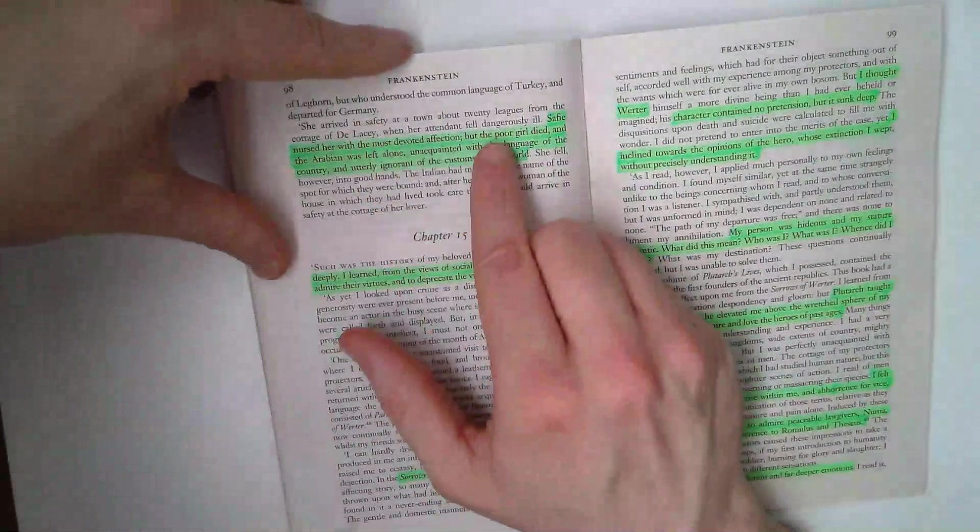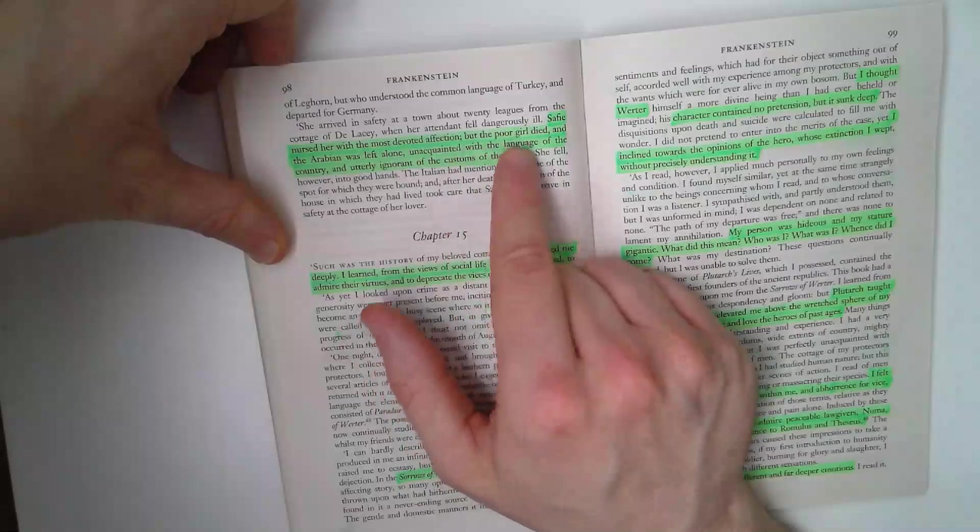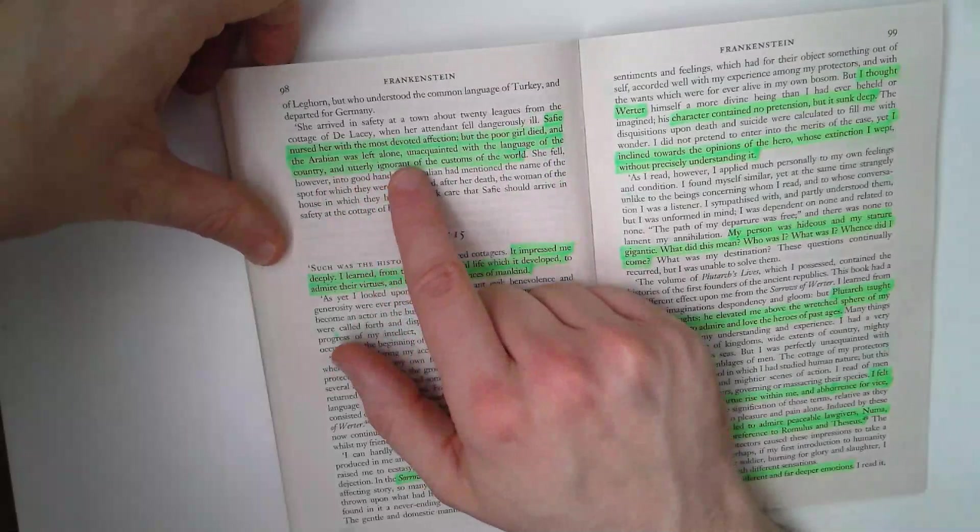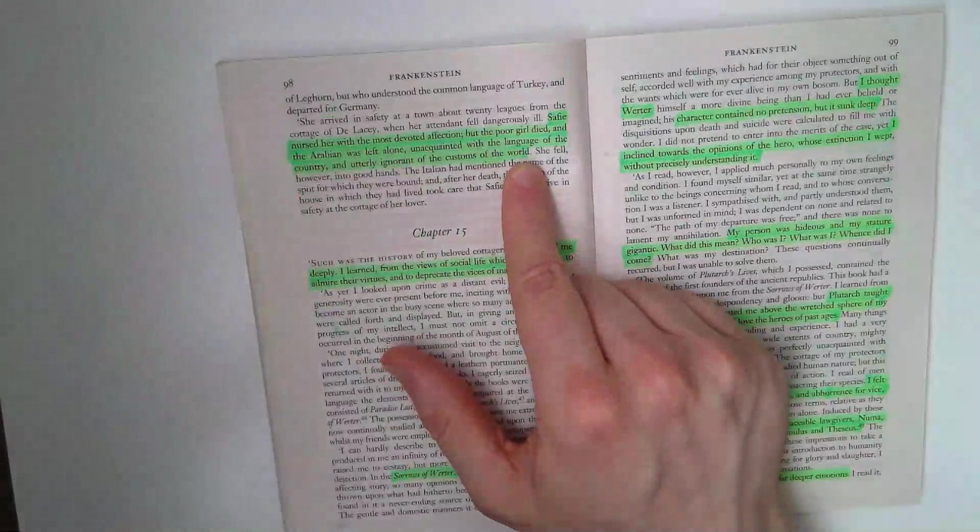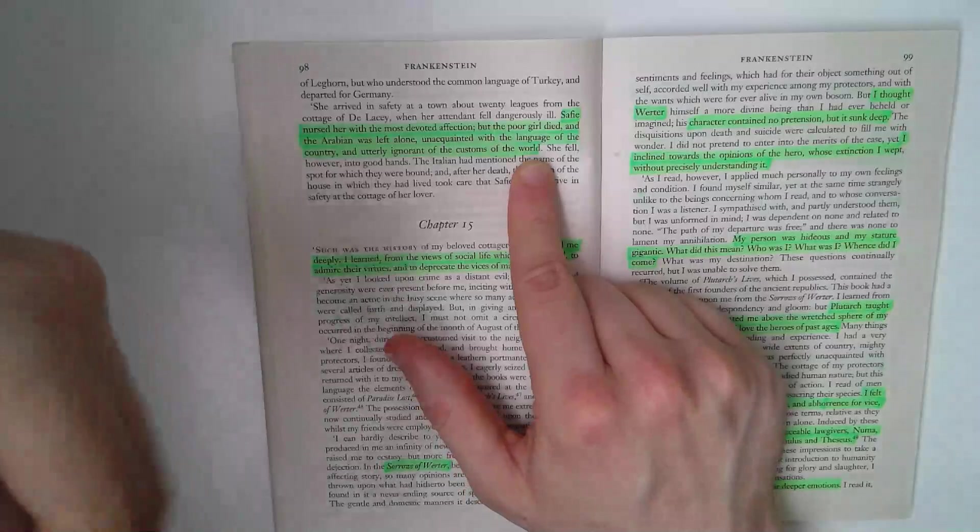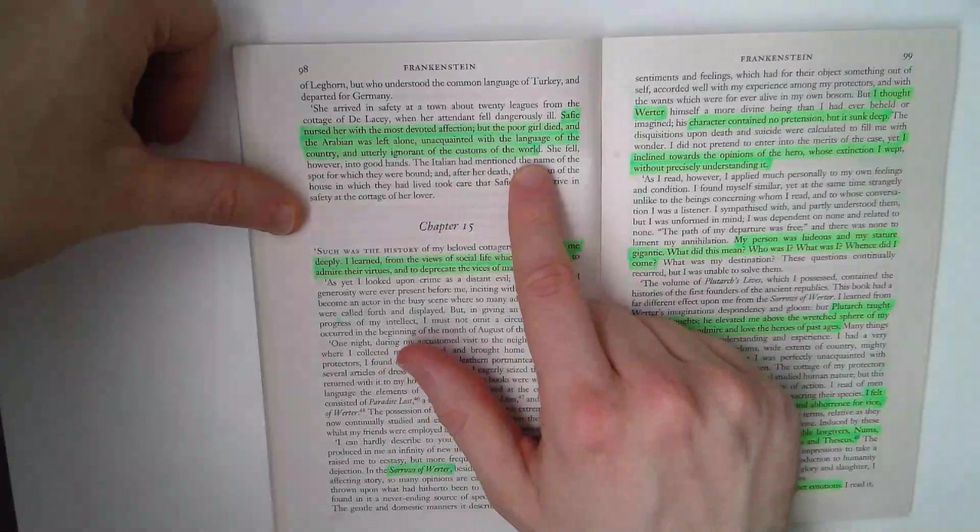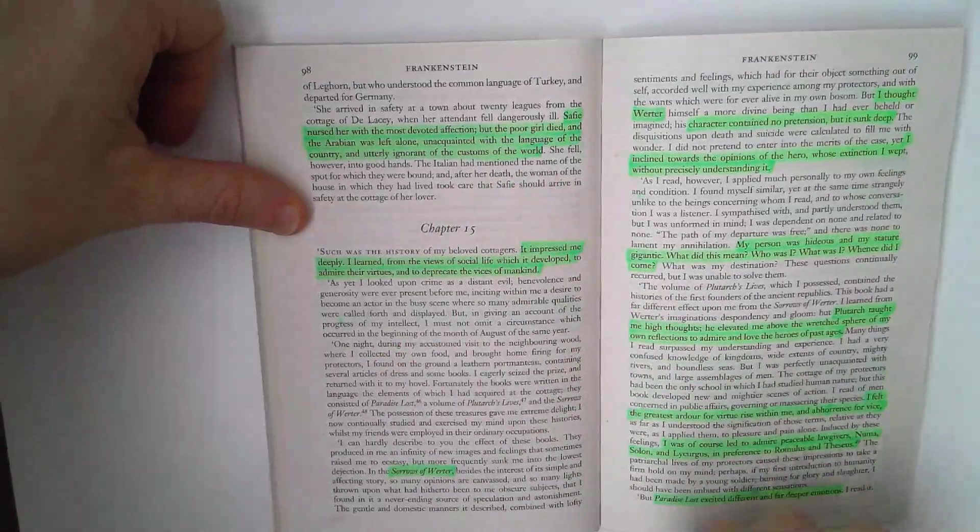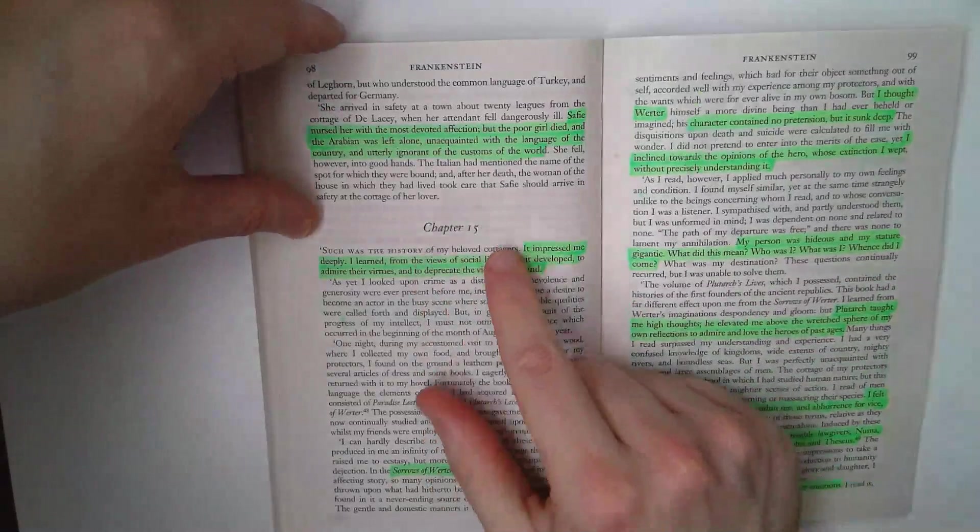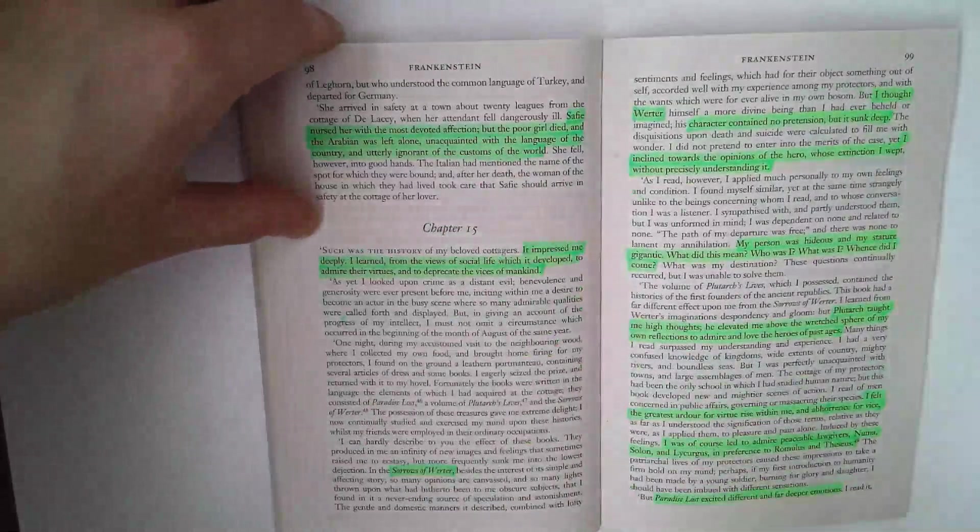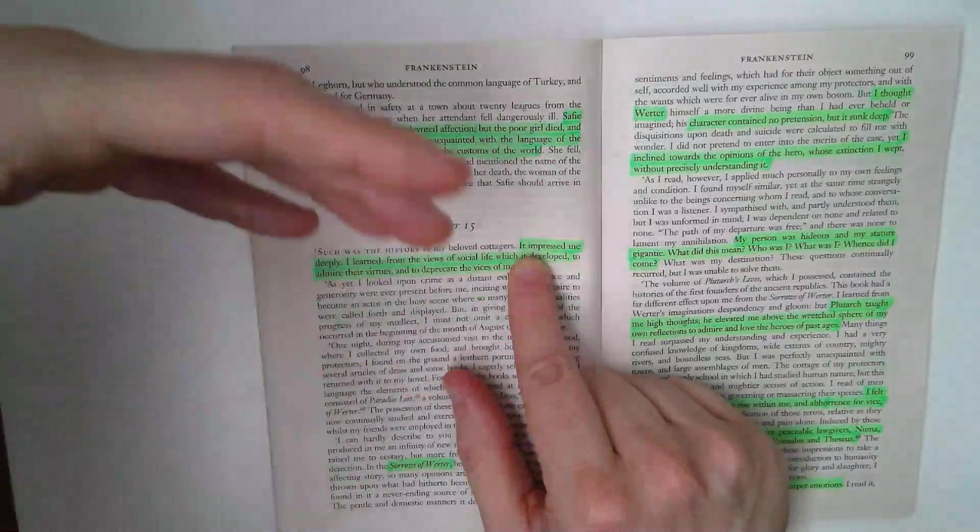She leaves and she goes to find Felix. Safi nursed her, she leaves with the most devoted affection, but the poor girl died and the Arabian was left alone, unacquainted with the language of the country and utterly ignorant of the customs of the world. We talked about this idea of Safi and the creature almost as parallels. Safi is in the exact same position as the creature. Whereas potentially in chapter 13 we saw the creature as jealous of Safi, by the time chapter 15 starts, Safi's story has such an impact on the family and the creature.